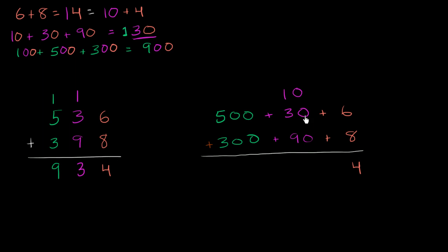Now we can add all the tens. 10 plus 30 plus 90, we've already figured out, is 130. Well, the part that is not a multiple of 100, we can write in this tens column, so the 30 part. And then the part that is a multiple of 100, we could put in the hundreds column.